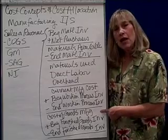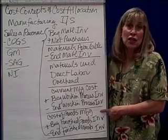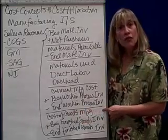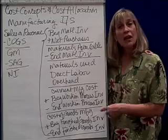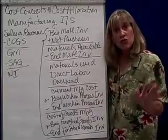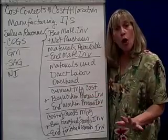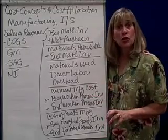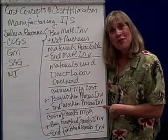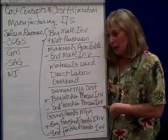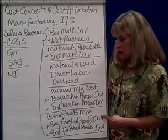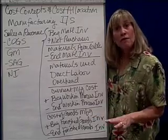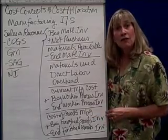That gives you a very important subtotal known as the cost of goods manufactured. If someone asks how much did it cost you to make the products, the cost of goods manufactured tells you the total cost of the products that you produced. So — cost of goods manufactured. To that I'm going to add the third and final kind of inventory, which is finished goods.